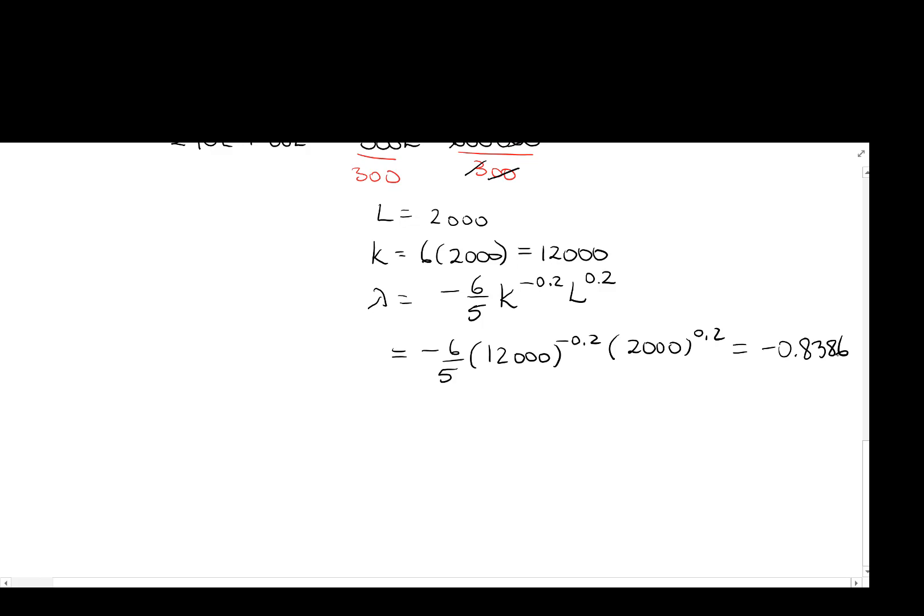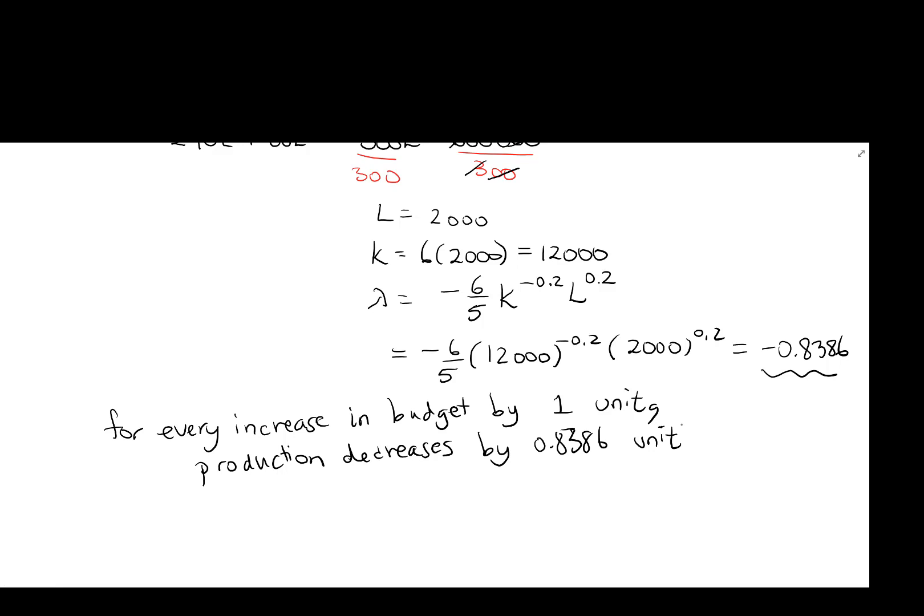So what my lambda actually means, thanks for bearing with me on those calculations there. What my lambda actually means is the following: production for every increase in the budget by one unit, production changes by this amount. So in this case, production decreases by 0.8386 units. So when you actually increase our budget from $600,000 to $600,001, our production actually decreases in this case. So that is the end of our Lagrange multiplier method Cobb-Douglas function example.